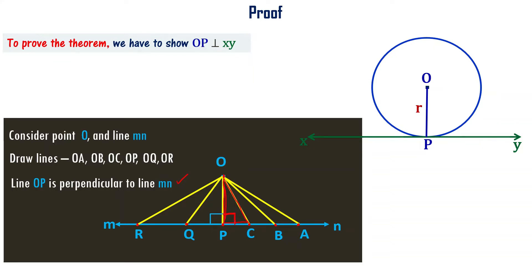OPC forms a right-angle triangle. OP is the perpendicular line. OC is the hypotenuse of this right-angle triangle. Let me consider another right-angle triangle: OPB is also a right-angle triangle. In a right-angle triangle, the square of the hypotenuse is equal to the sum of the squares of the other two sides.